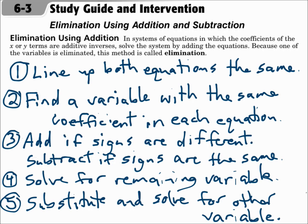To solve with elimination, follow these steps. Number one, line up both equations the same — your x's, then your y's, then your equals, and then your constants. Step two, find a variable with the same coefficient in each equation. Three, if the signs are different, add the equations together, and if the signs are the same, subtract the equations. Four, solve the equation for the remaining variable, and last, substitute that value into either equation and solve for the other variable.